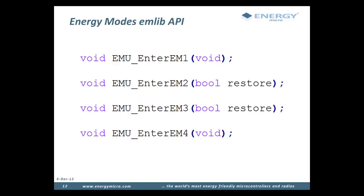To make it easy to switch between energy modes, the EMlib API provides functions to enter the low-energy modes directly. These functions perform the operations discussed previously in order to enter the low-energy modes. When entering EM2 or EM3, some or all of the oscillators will be turned off. The restore parameter on these functions can be set to true if you want to restore the oscillators to their state prior to entering the energy mode when the MCU is waking up. Note that this is done in software and will not be done before the interrupt that woke up the MCU has finished executing.